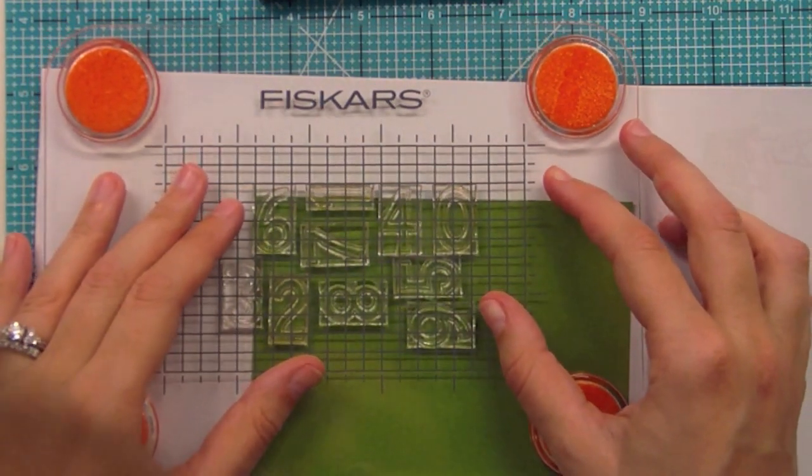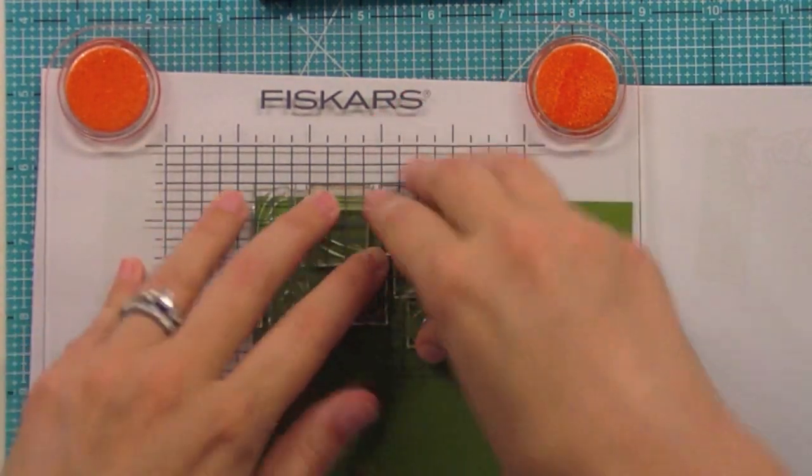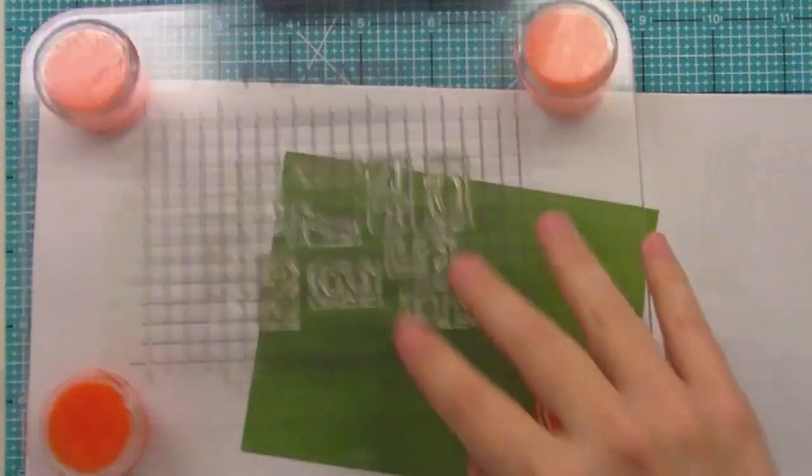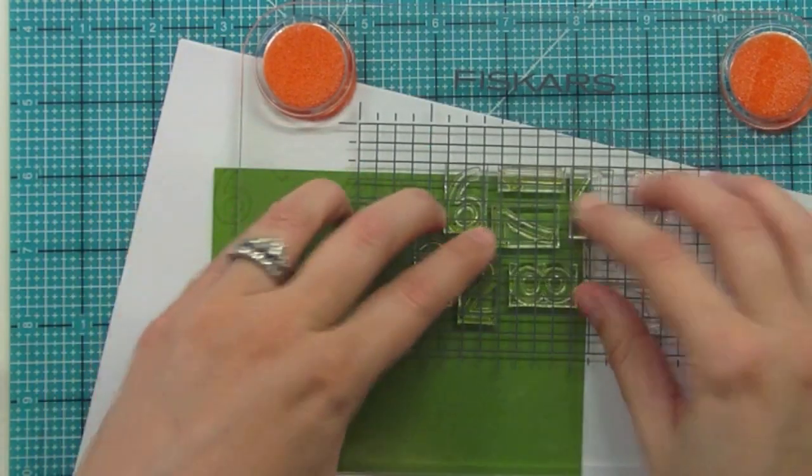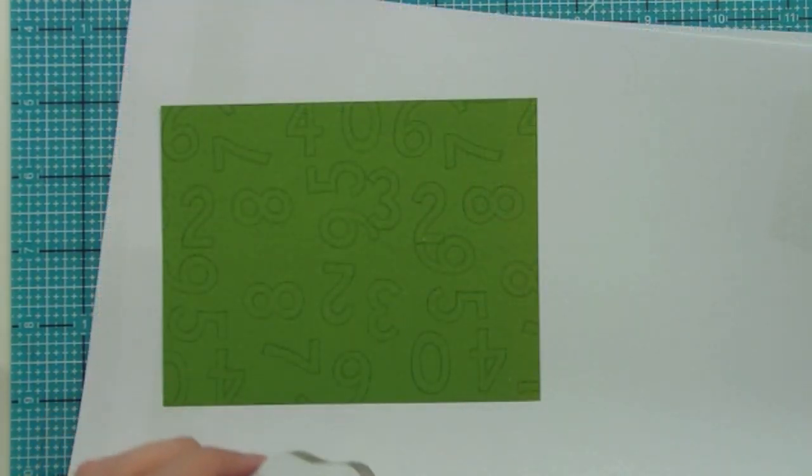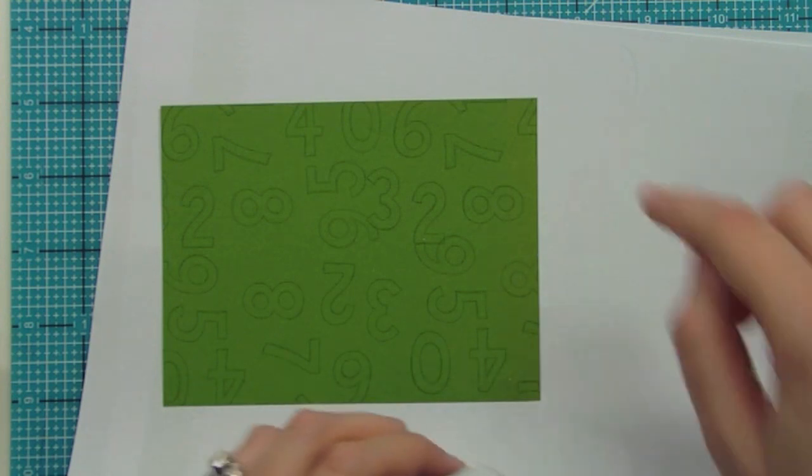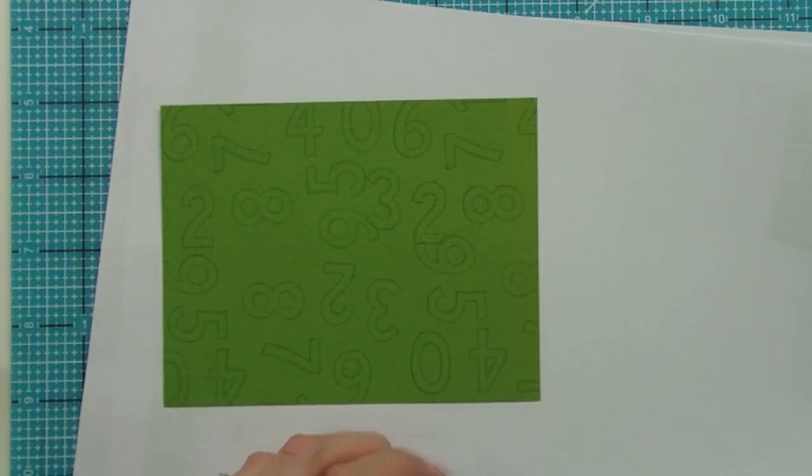It really helps, I think, in creating that seamless pattern look. Already you can see how fun that's looking. Okay so we have a pretty fun pattern going here. The next thing I want to do is just fill in a couple of the blank spots.